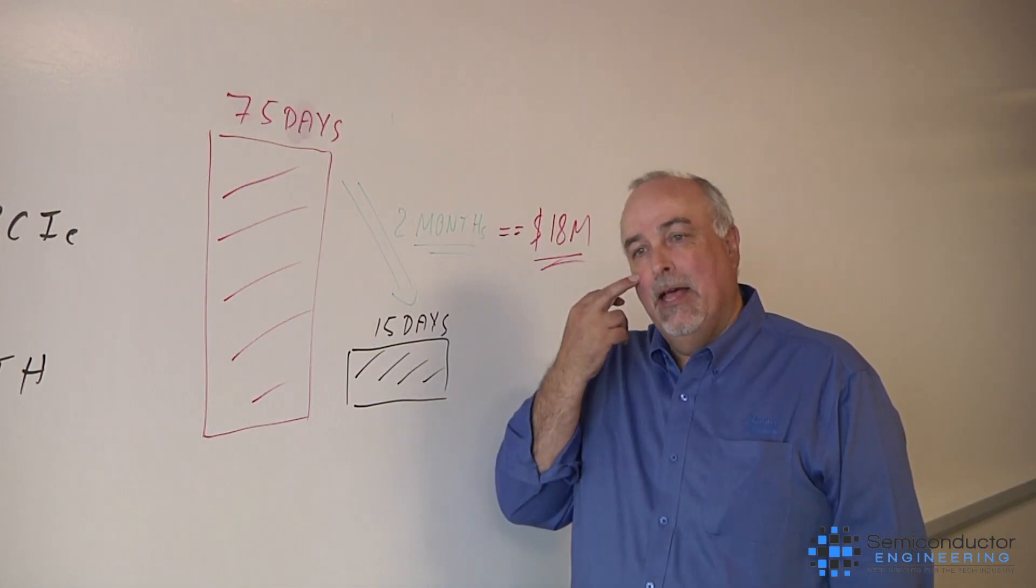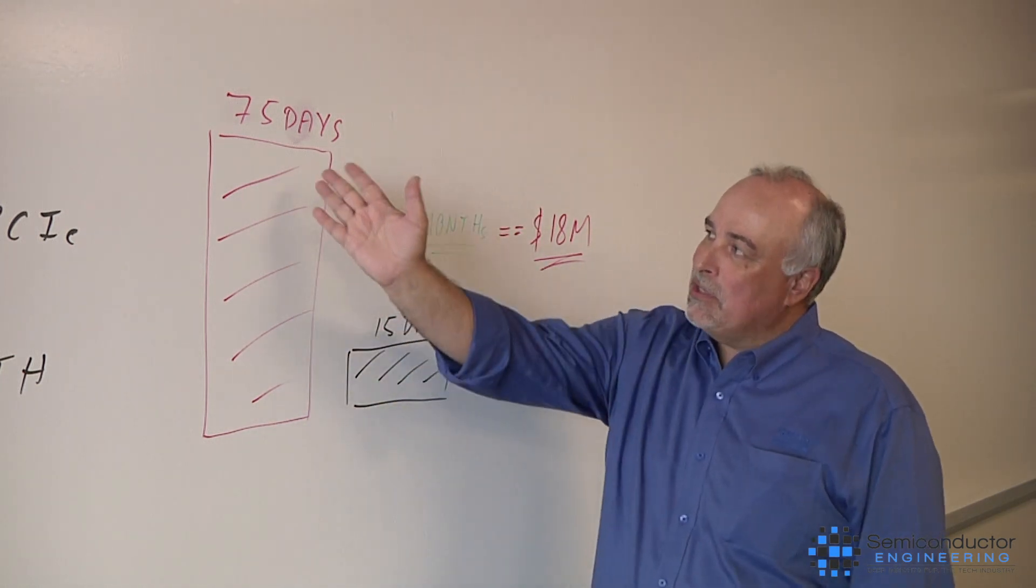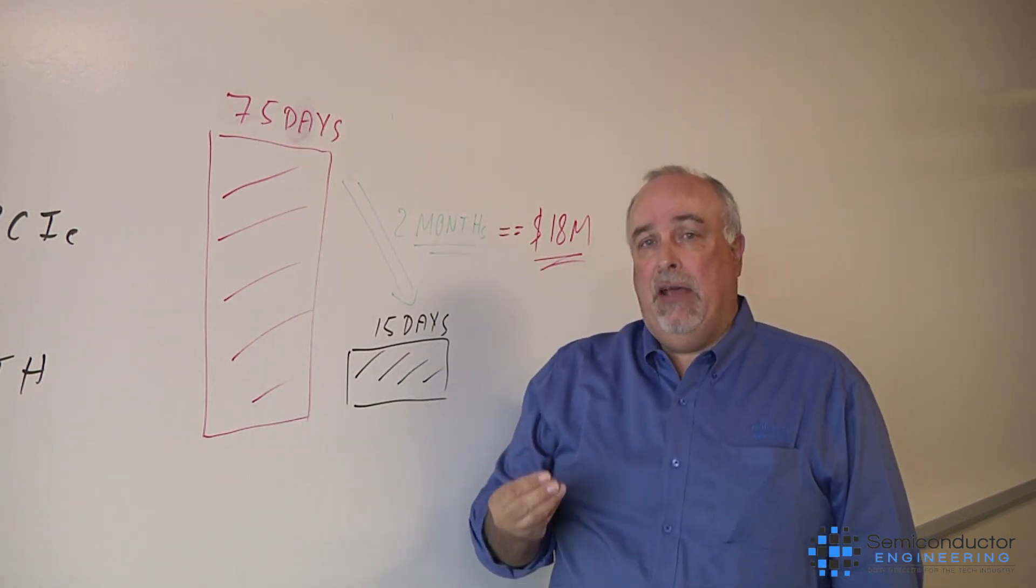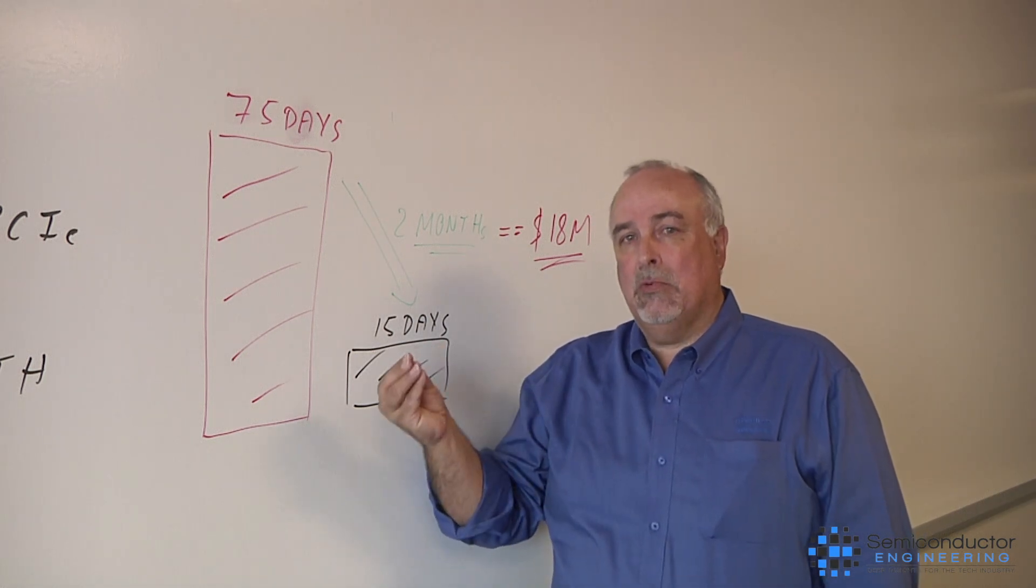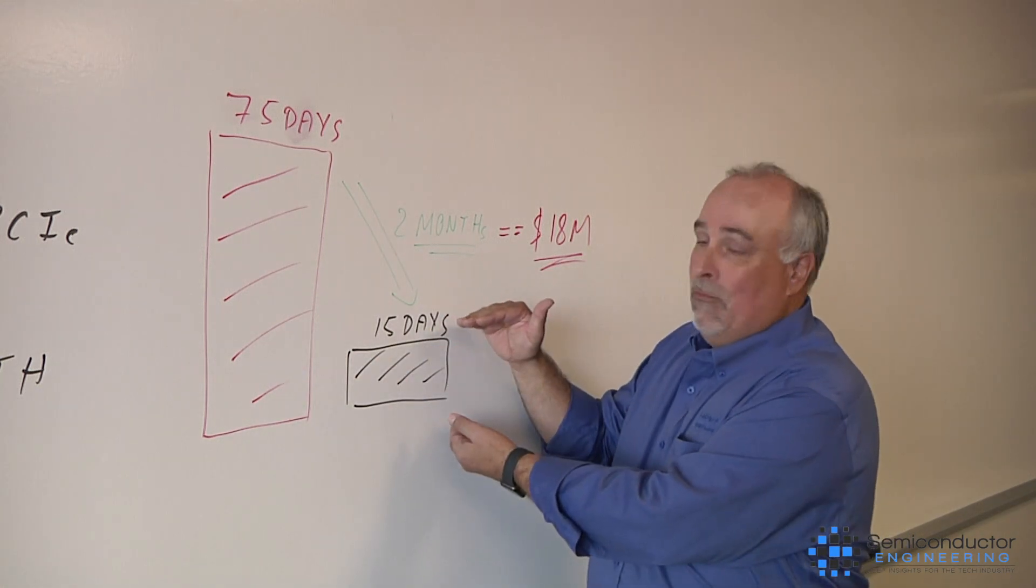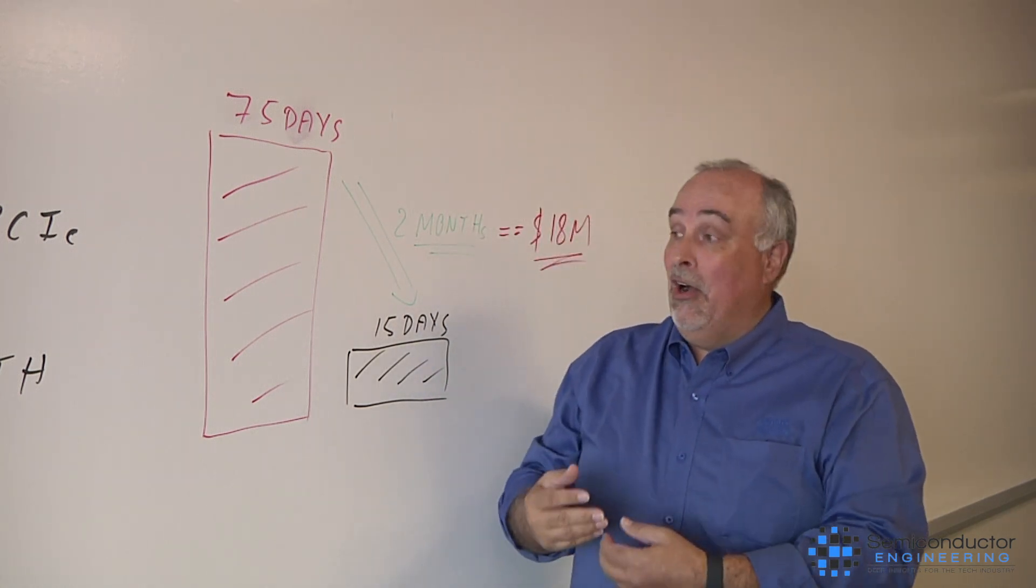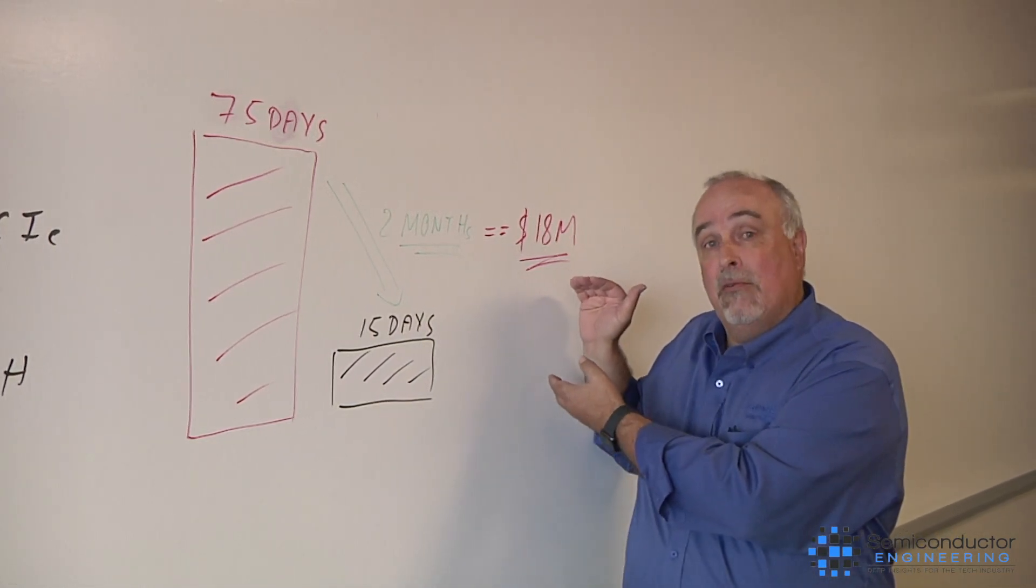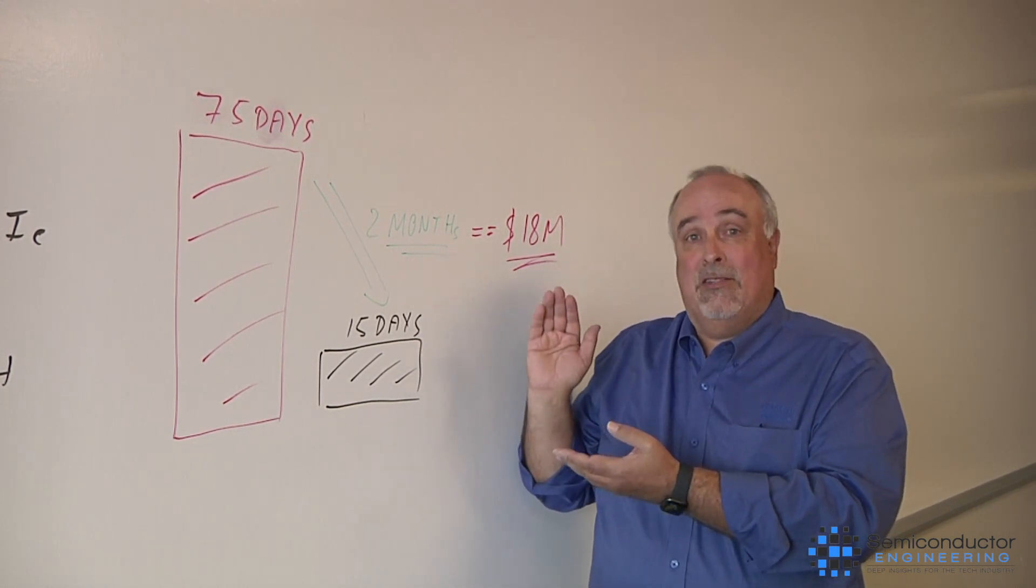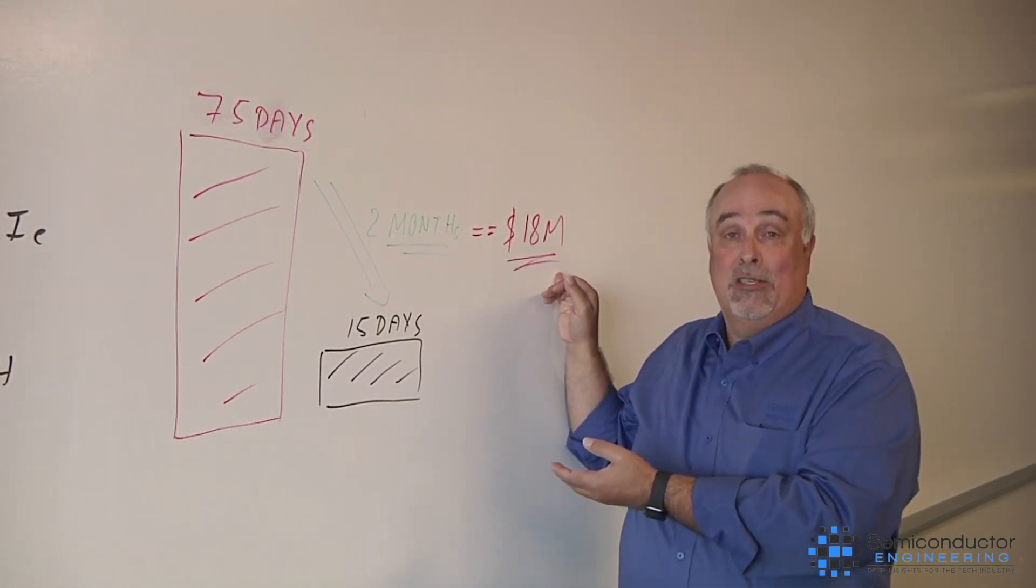If you employ FPGA prototyping, how much can you actually save? Here's a real customer example to look at it. So in this case, without doing prototyping, it took that customer 75 days after the first silicon came back to now do the hardware-software integration and get to a point where you can ship product to market. Using prototyping, that time was reduced to 15 days, which means a saving of 60 days, 2 months. Now, let's assume that the product itself generates $100 million of revenue a year. $100 million a year, do the math, it's about $300,000 a day, or in this 2 months you save $18 million. That's a lot of money.